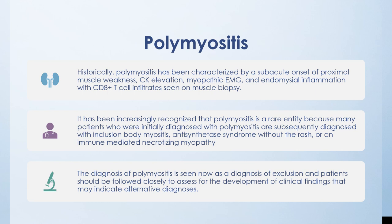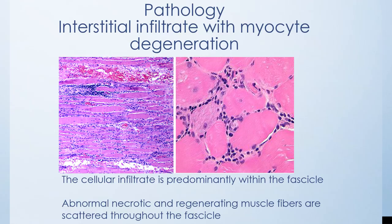Polymyositis has historically been characterized by subacute onset of proximal muscle weakness, elevated CK, myopathic EMG, and endomysial inflammation with CD8-positive T-cell infiltrates on muscle biopsy. Over the years it has been increasingly recognized as a much rarer entity, because many patients initially diagnosed with polymyositis were subsequently found to have dermatomyositis, antisynthetase syndrome, inclusion body myopathy, or immune-mediated necrotizing myopathy. Therefore, polymyositis is now considered a diagnosis of exclusion. The pathology slide shows interstitial infiltrate with myocyte degeneration, cellular infiltrate predominantly within the fascicles, and scattered necrotic and regenerating muscle fibers.